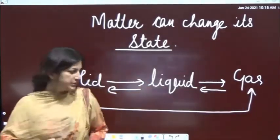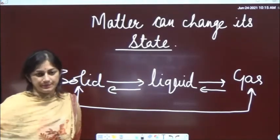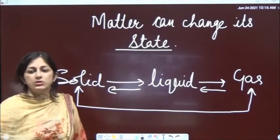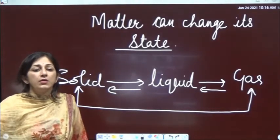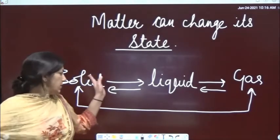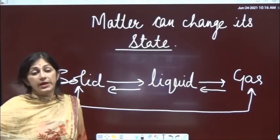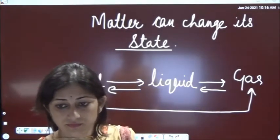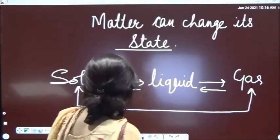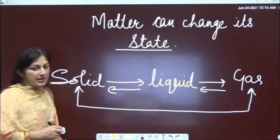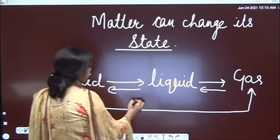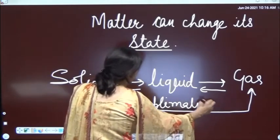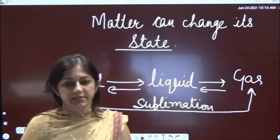Solid to gaseous or gaseous to solid is also possible. The example I told you - phenyl balls that are kept in clothes, in woolen clothes - those phenyl balls directly change from solid to gaseous state. So it directly changes from solid to gaseous state, and that process is known as sublimation. This process is sublimation.